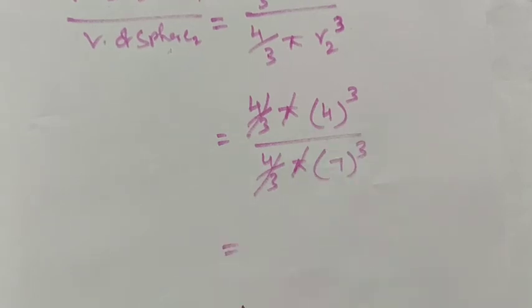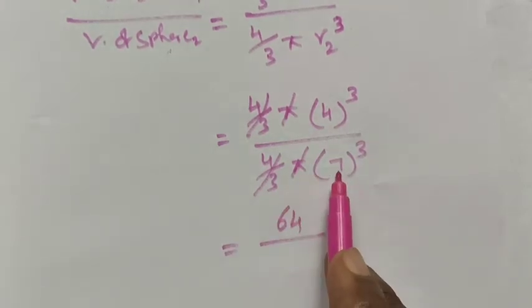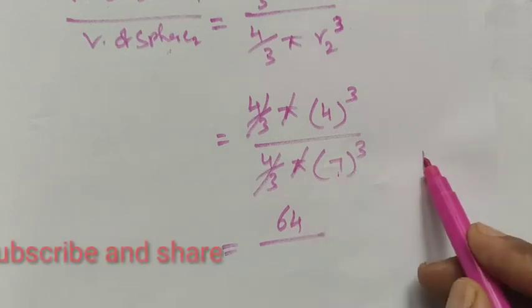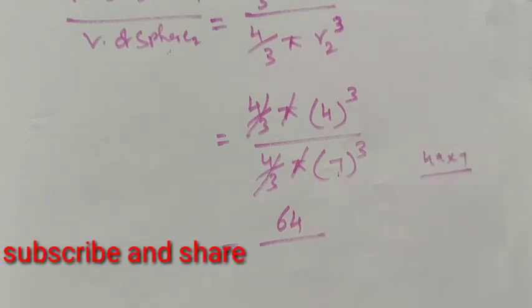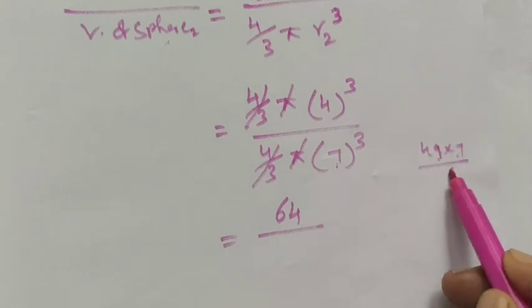4 times 4 is 16, 16 times 4 is 64. Divided by 7 cubed: 7 times 7 is 49, 49 times 7...